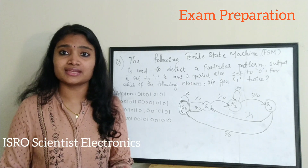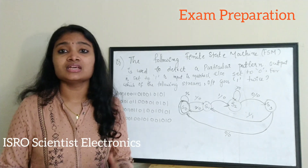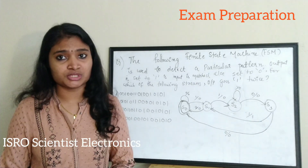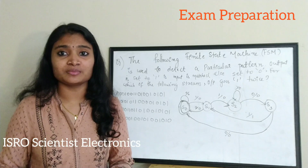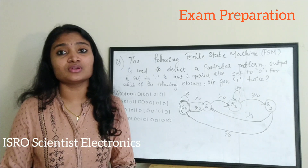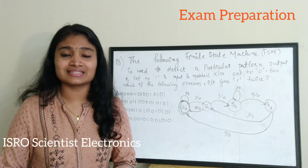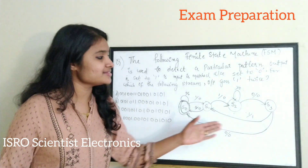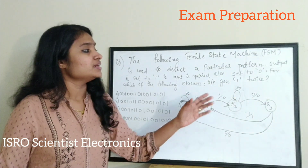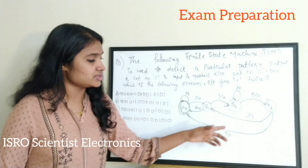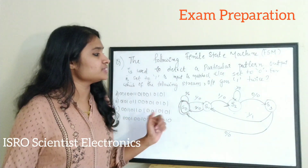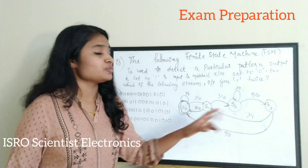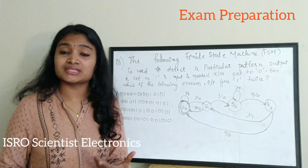There are mainly two types of finite state machines: the Mealy machine and the Moore machine. We have already done a video on Mealy and Moore machines, so if you are not familiar with the concept please do watch that video. Looking at the figure, this is a Mealy type of sequence detector.